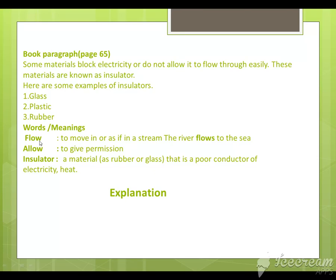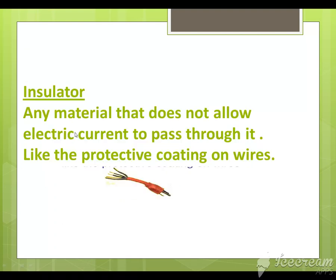The word 'flow' means to move in or as if in a stream — the river flows to the sea. 'Allow' means to give permission. An insulator is a material like rubber or glass that is a poor conductor of electricity and heat — any material that does not allow electric current to pass through it, like the protective coating on wires. Wires are coated with plastic so that you cannot get a current or shock.